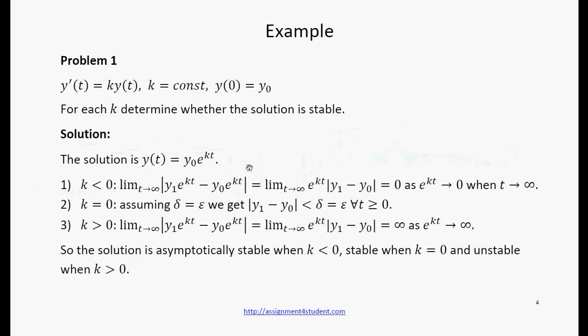First, k is negative. Then the absolute value of the difference between the original and perturbed solution tends to 0, so the solution is asymptotically stable.